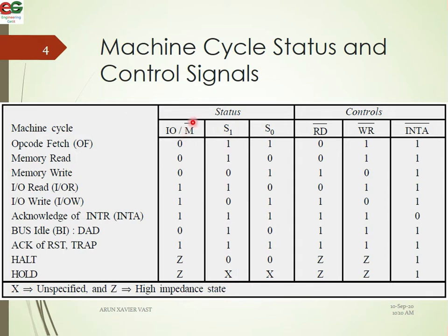Here is an important point: the bar over M means that we write active low signals as a complement. The bar notation means active low signals. M is the operation — M is for Memory. The operation can be read and write.